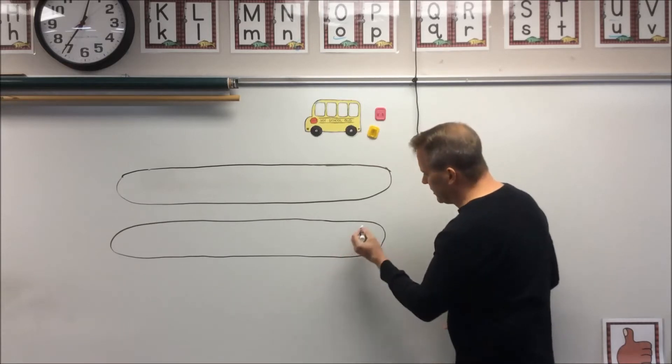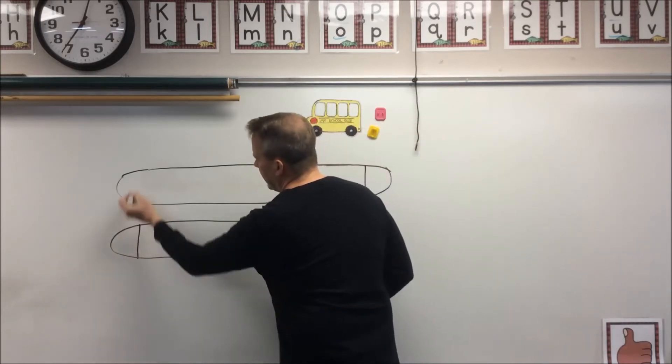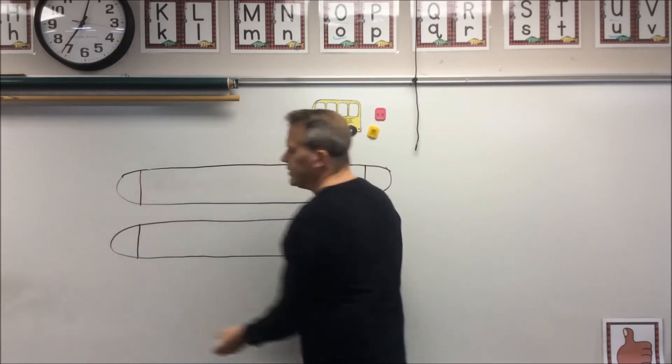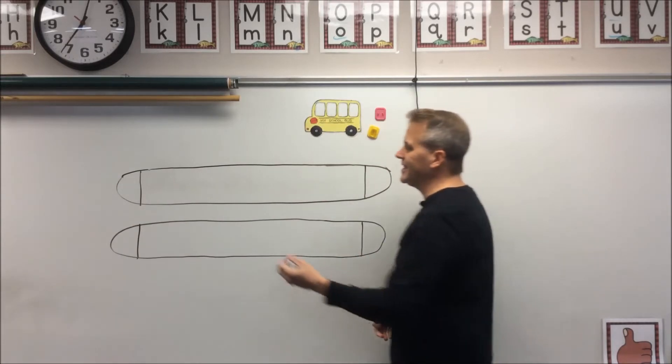On your popsicle stick, on the very end of each one, you're going to just draw a line up and down like this and you're going to pick a number. So for this example, I'm going to use the number seven.